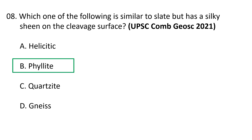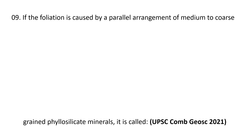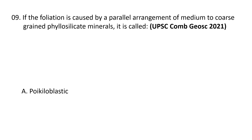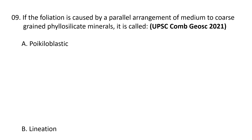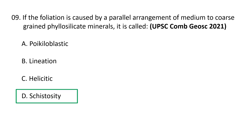Question 9: If the foliation is caused by parallel arrangement of medium to coarse grain phyllosilicate minerals, it is called: (a) porphyroblastic, (b) lineation, (c) helicite, or (d) schistosity. The correct option is D — schistosity. Schistosity is the mode of foliation that occurs in certain metamorphic rocks as a consequence of the parallel alignment of platy and lath-shaped mineral constituents, reflecting considerable intensity of metamorphism including changes from high temperatures, pressures, and deformation.